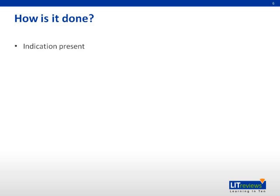Firstly, an indication for a transplant must be present. Next, we have to identify a potential donor, usually a sibling. If this is not possible, then we have to consider searching for an unrelated donor. Then, typing of the patient and donor for human leukocyte antigens, or HLA, is done, and potential matches are identified, and the best donor is selected.